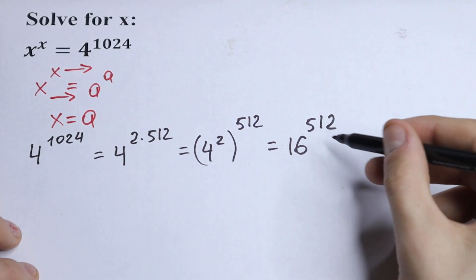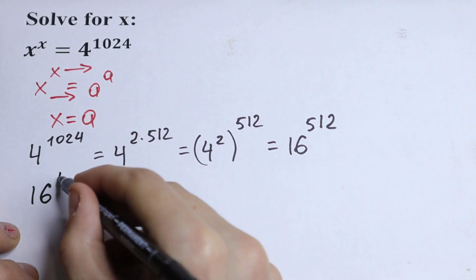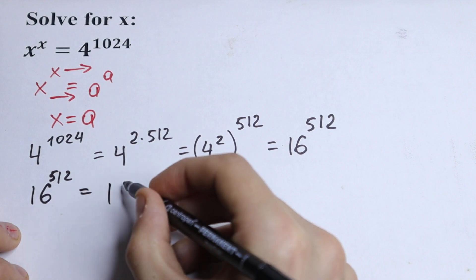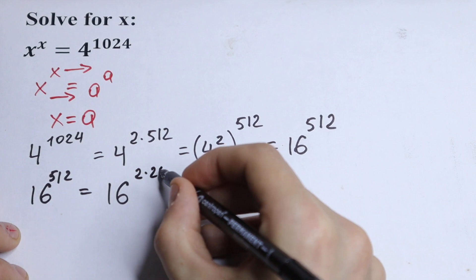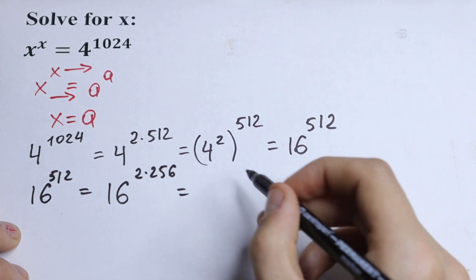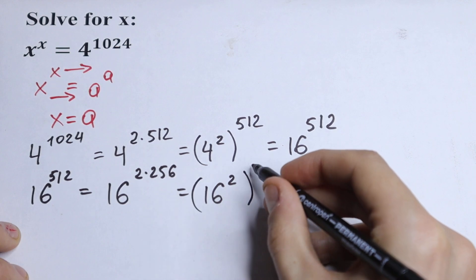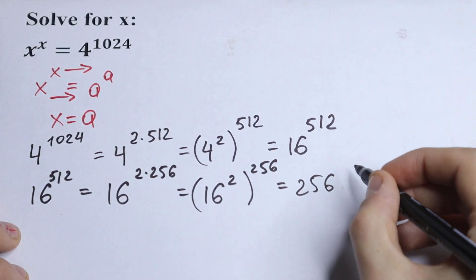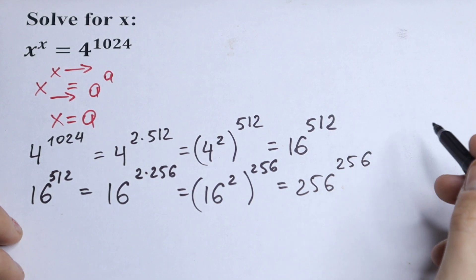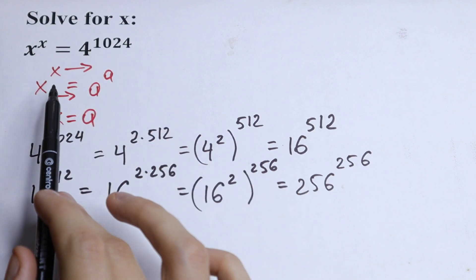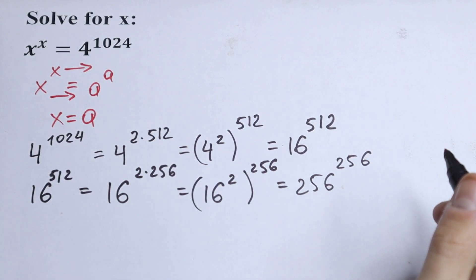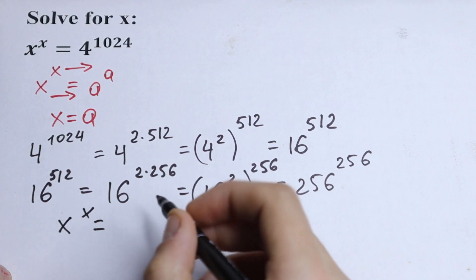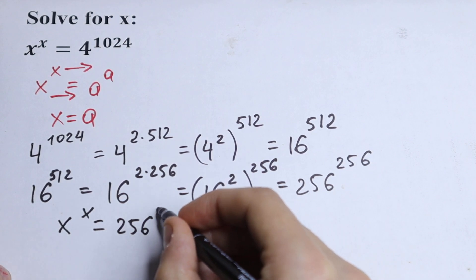Let's do one small step and simplify once more. We have 16 to the power 512. We write 512 as 2 times 256, so we get 16 squared, all raised to the power 256. That equals 256 to the power 256.